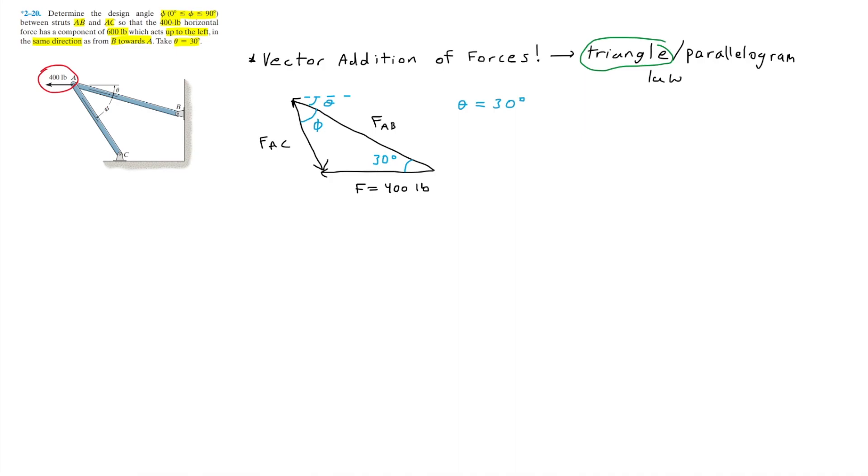From here, we're trying to find the angle phi. In this statement, force FAB is equal to 600 pounds. So I'll define FAB as 600 pounds. Now knowing that the magnitude of the forces essentially represent the length of our vectors, from our triangle, we have two known lengths or sides and only one known angle.